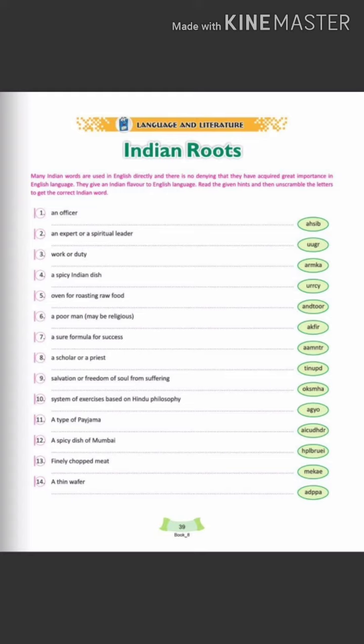Salvation or freedom of soul from suffering, that is moksha. A system of exercises based on Hindu philosophy, that is yoga. A type of pajama, that is churidhar. A spicy dish of Mumbai, bhelpuri. Finally, chopped meat, that is called keema. Last is a thin wafer, that is papad.